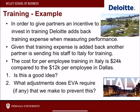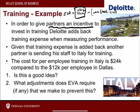Training is an actual expense, and EVA is after-tax income minus WACC times assets minus current liabilities. So the training expense reduces after-tax income. If partners' bonuses depend on increasing that income, they may say it's not worth it to send employees to training. Deloitte wants to adjust this — they want partners to feel incentivized to invest in training because they want them to have that long-term perspective. So they add training costs back into income.